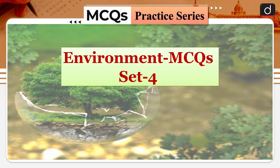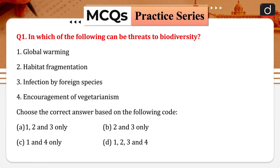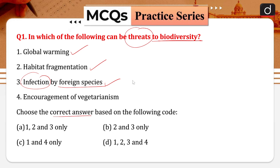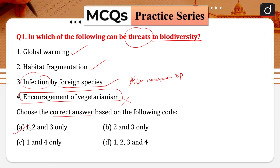Question number one: which of the following can be a threat to biodiversity? Options include global warming, habitat fragmentation, infection by foreign species, and encouragement of vegetarianism. Global warming can be a threat to biodiversity, habitat fragmentation can be a threat, and infection by foreign species — basically alien or alien invasive species — is also a threat. Encouragement of vegetation is a bit overboard and can be rejected. Option A would be the right answer.